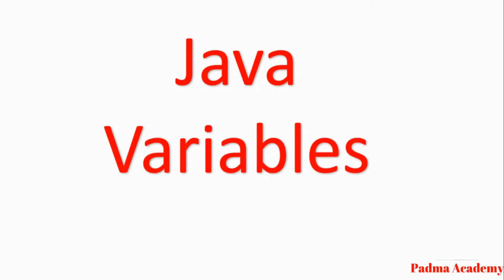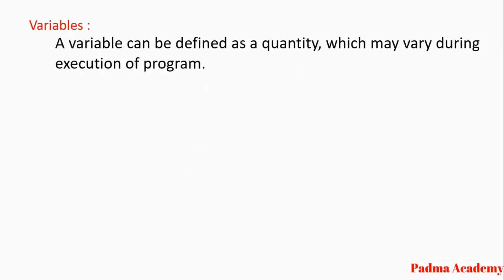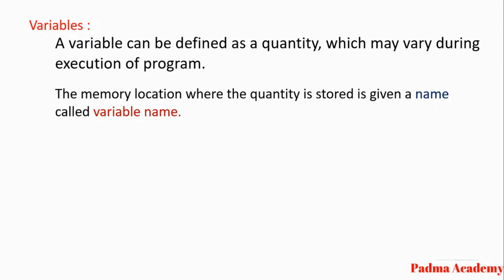Hello friends, welcome back to my channel. In this video we are going to discuss about Java variables. First of all, you need to know what is meant by a variable. A variable can be defined as a quantity which may vary during execution of the program. The memory location where the variable is stored is given a name called a variable name.